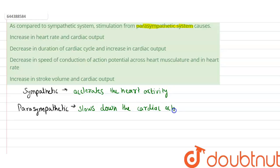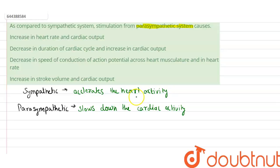In option A, increase in heart rate is given — this is not the effect of parasympathetic; it actually works for sympathetic. So it is not the answer. Option B, decrease in duration of cardiac cycle and increase in cardiac output — this is also sympathetic. If the heart activity accelerates, the cardiac cycle duration decreases and cardiac output increases. So option B is also sympathetic.